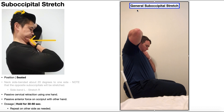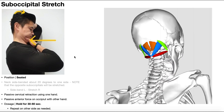Why do I call this a general suboccipital stretch? Well, remember, because we have left and right suboccipitals. The general form of the stretch gets both of them left and right to a small extent, but it doesn't get either of them to a large extent. So some people may get a benefit out of this form of the stretch, and some of them may not feel it at all.